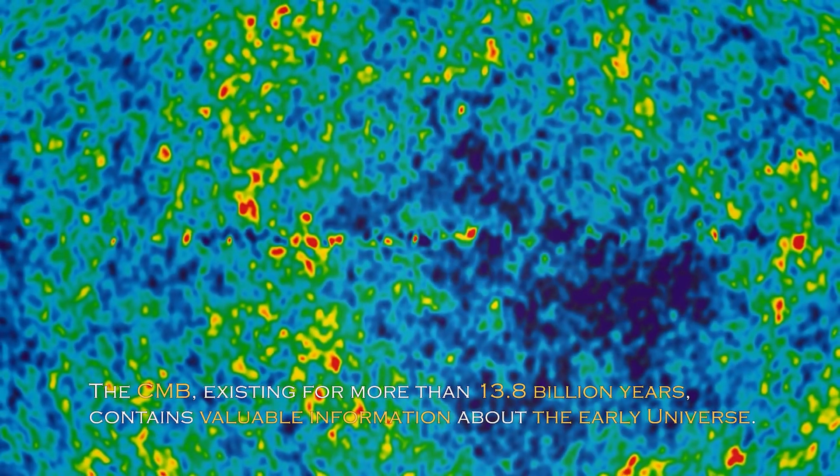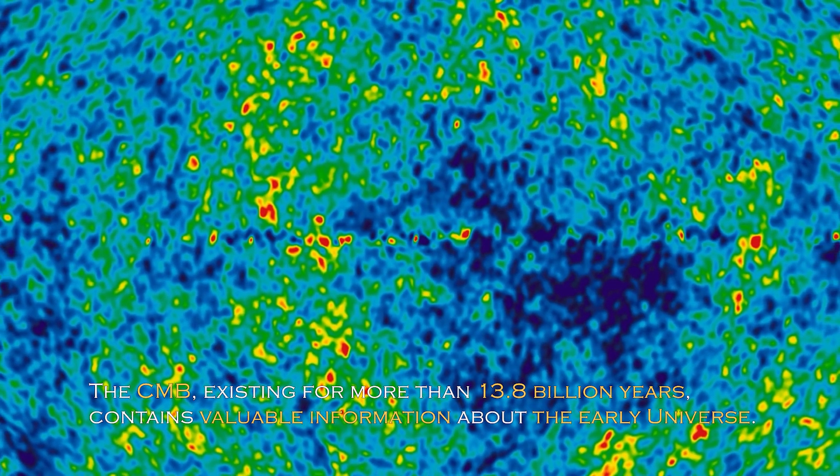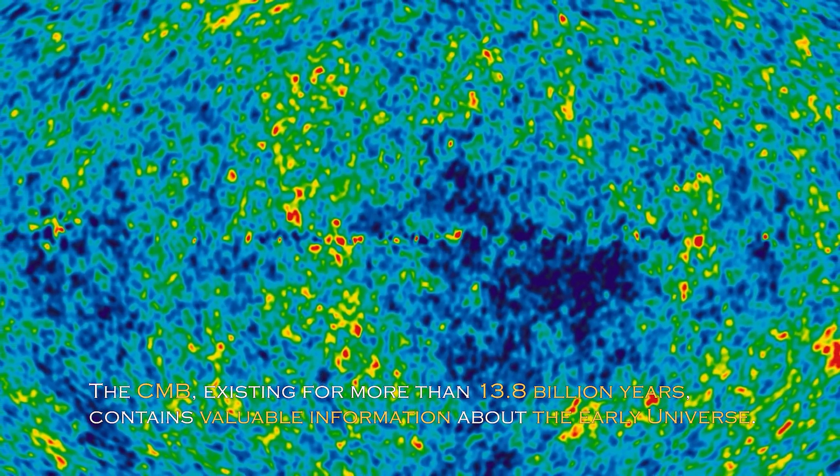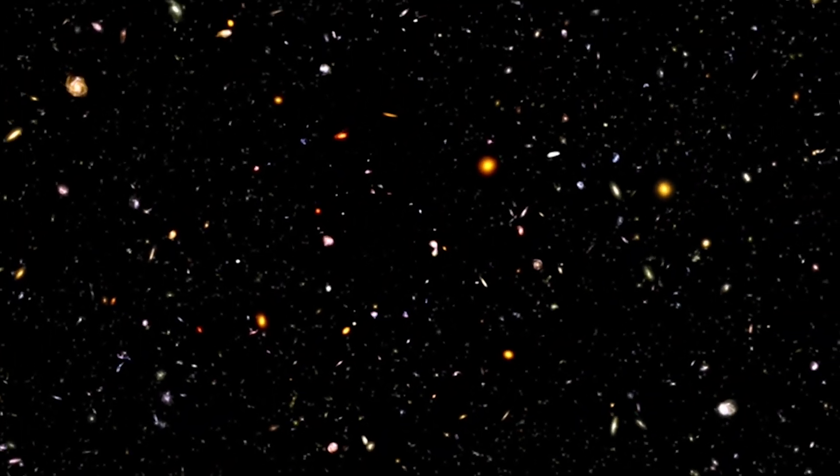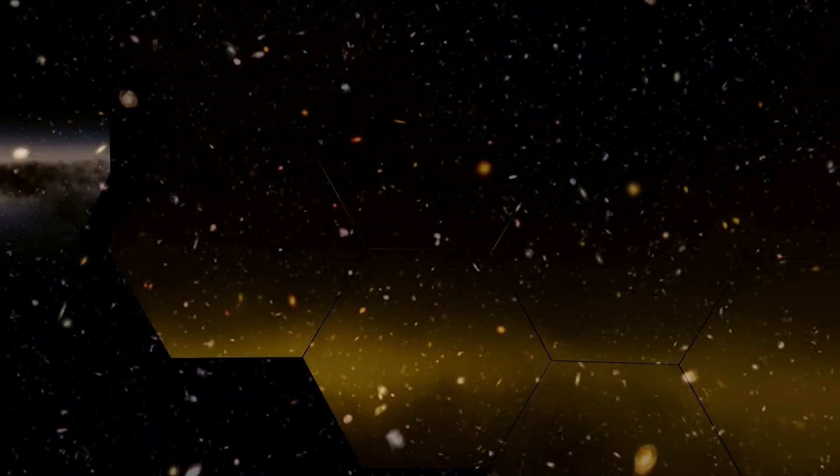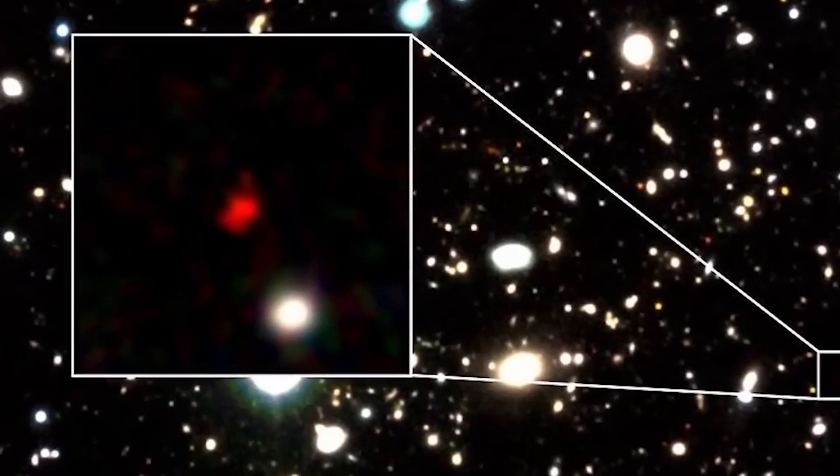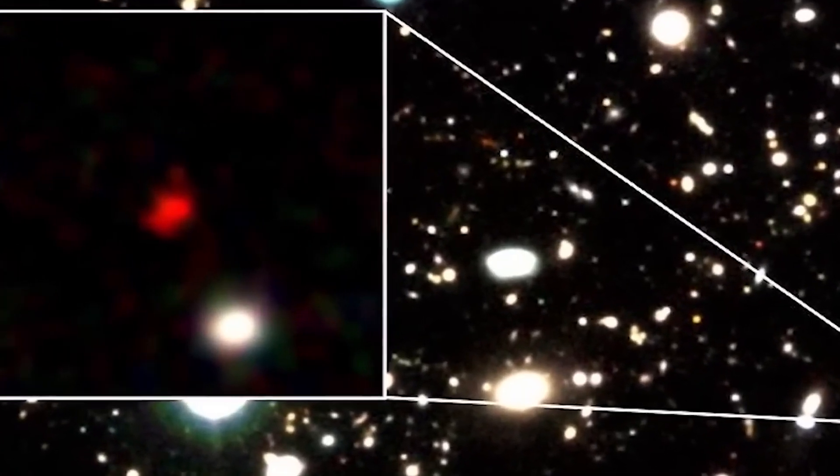The CMB, existing for more than 13.8 billion years, contains valuable information about the early universe. Over the years, theories defining the evolution of the universe have undergone remarkable changes due to new discoveries and advances in research technology. These findings have required adjustments to existing theories and, on occasion, the creation of new theories.